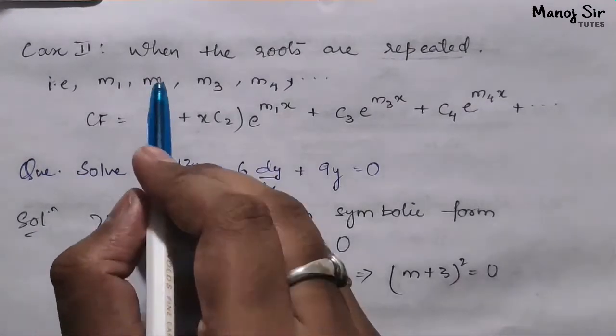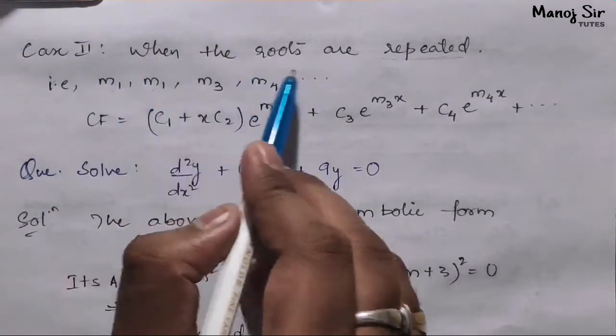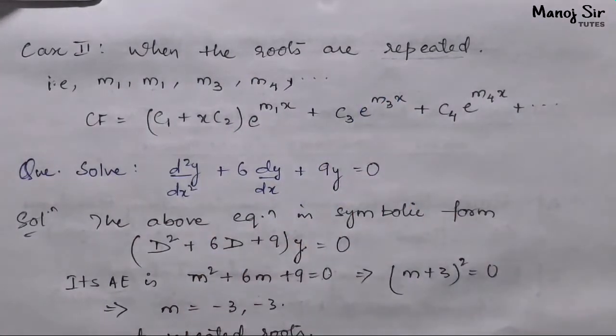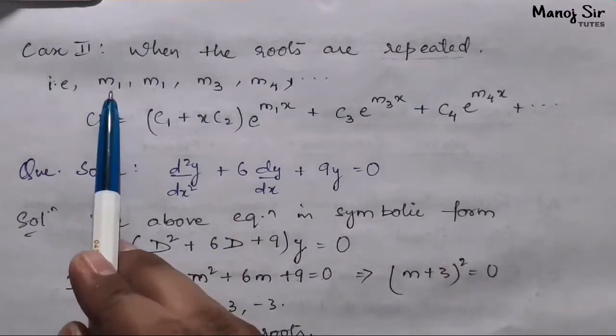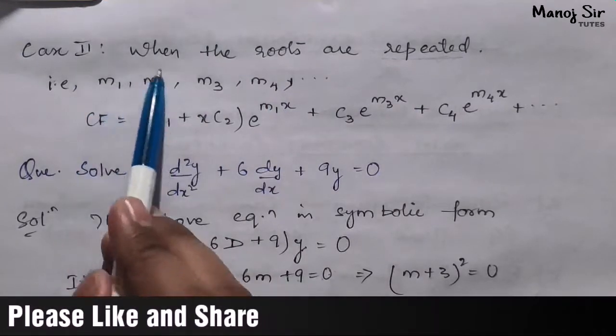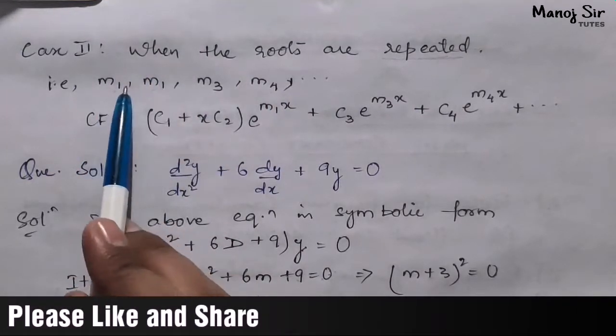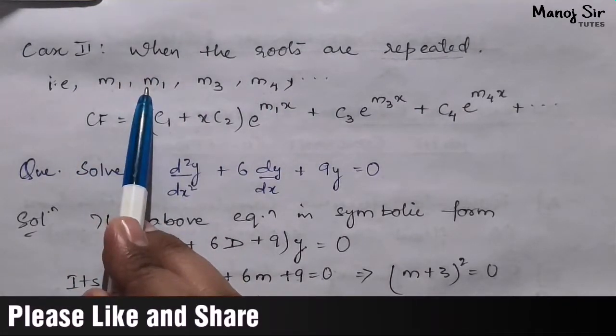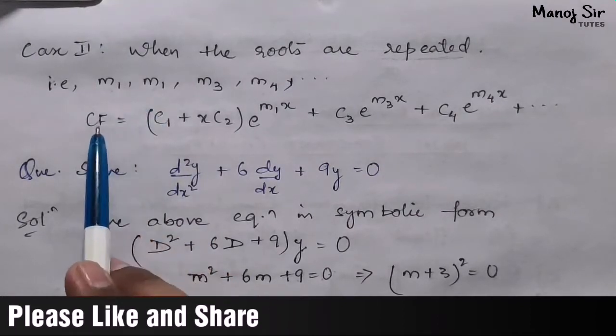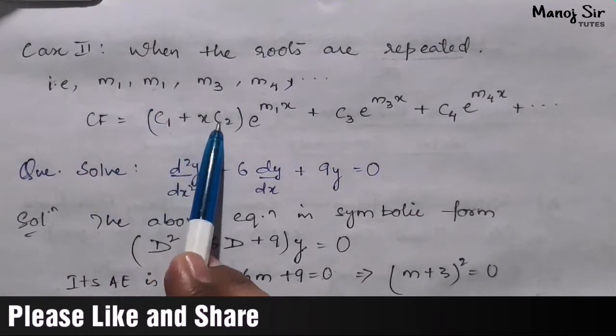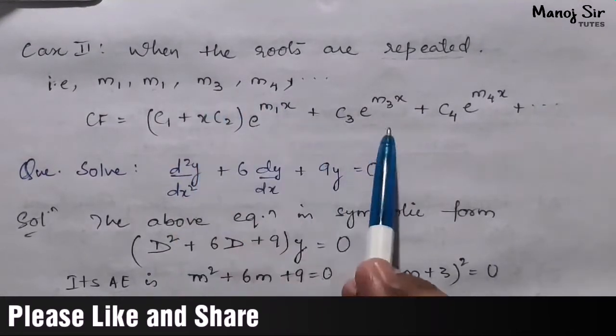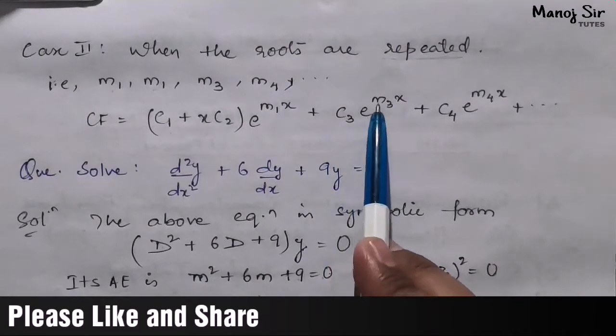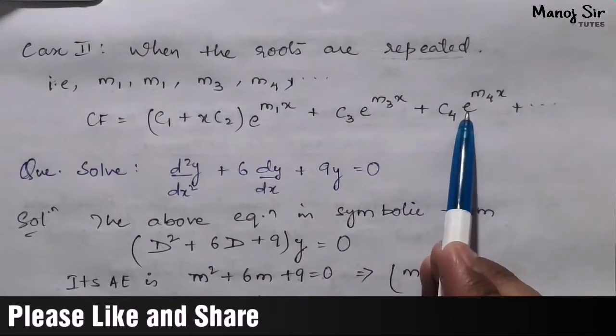Let us start Case 2: when the roots are repeated. The first case was when the roots are real and distinct, but in Case 2 it is when the roots are repeated. That is m₁, m₁, m₃, and m₄ - you can see that m₁ is repeated. If such is the case, then CF equals (c₁ + xc₂)e^(m₁x) + c₃e^(m₃x) + c₄e^(m₄x) and so on.